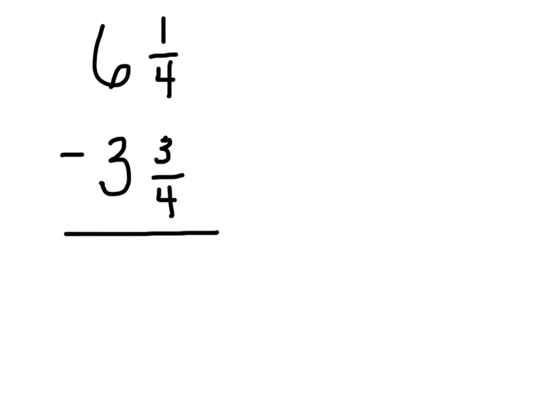Alright, so let's try again. This time we have 6 and 1 fourths minus 3 and 3 fourths. Once again my top number 6 and 1 fourths is larger than my bottom number so I'll be able to subtract.